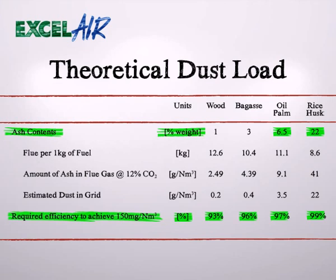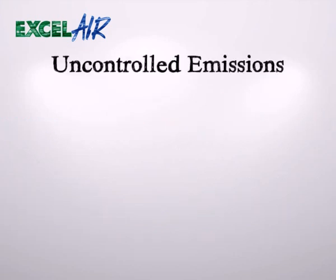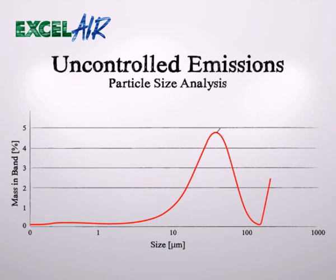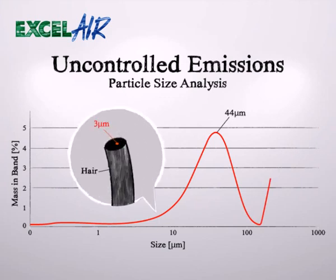From this chart, it is evident that fuel from typical biomass may influence the dust concentration by a factor of 10. While the ash content varies considerably, the particle size distribution after a properly operated boiler is remarkably consistent. A typical distribution is shown in this graph. To keep the particle sizes in perspective, a typical human hair is 70 microns in diameter, and the dot on the hair is 3 microns.